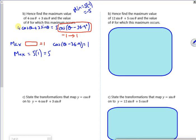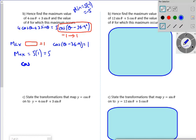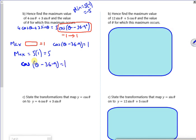Now the next bit says, find where it occurs. So I just need to solve where cos(θ - 36.9°) is 1. So I've just done the inverse cos, moved the 36.9 over.